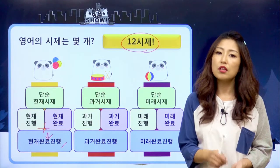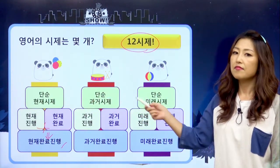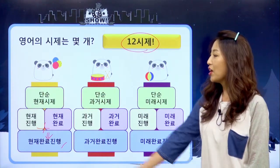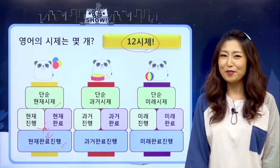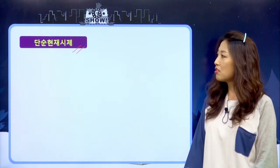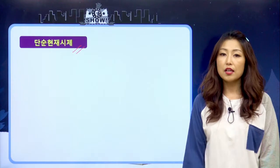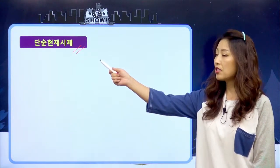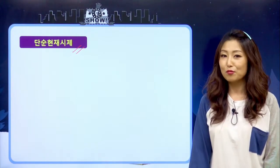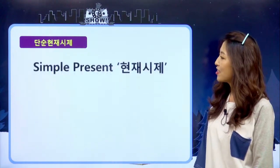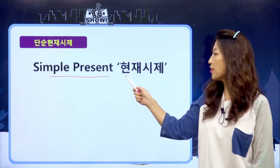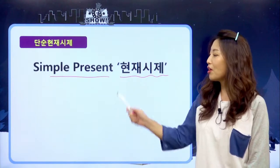선생님하고 우리 친구들이 이제부터 알아볼 거는 가장 기본이 되는 현재, 과거, 미래 시제에 대한 이야기예요. 단순 현재 시제를 왜 이렇게 부르는지는 현재 시제를 설명하면서 말해줄게요. 보통은 편하게 현재 시제라고 불러요. 진행 시제와 완료 시제의 모양이 다르기 때문에 구분하려고 단순 현재 시제라고 부르는 거예요. Simple present는 영어로 단순 현재라는 뜻이에요.